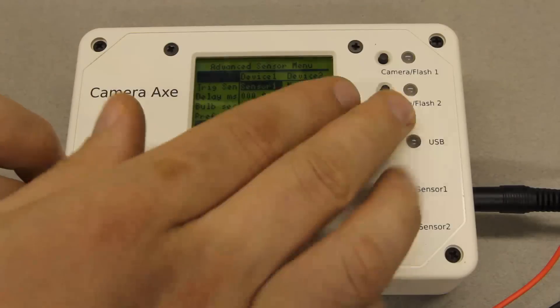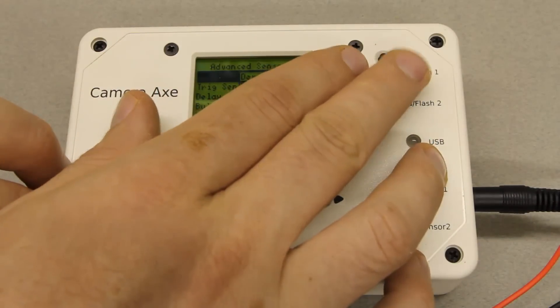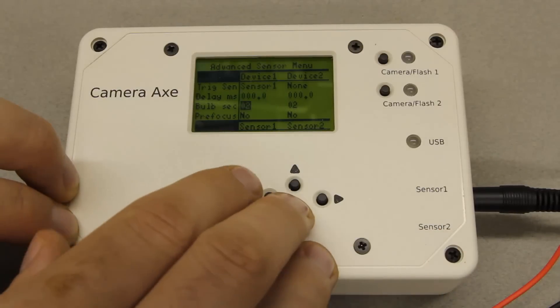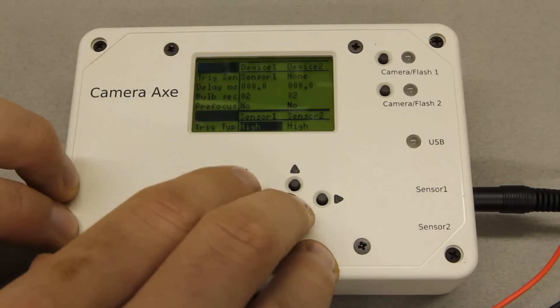I'm having device number one, which can be either a camera or a flash, be triggered by sensor port number one, which is where the clip sensor is plugged in.